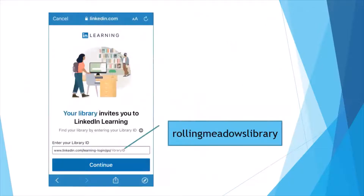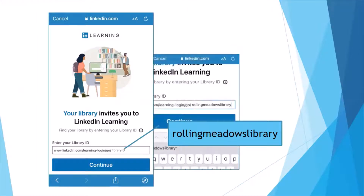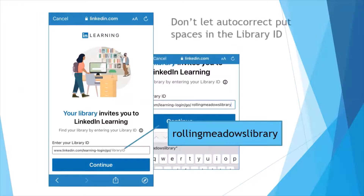The library ID for Rolling Meadows Library is "RollingMeadowsLibrary", typed as all one word at the end of the URL that shows in the box. Sometimes the autocorrect on your device will want to add spaces, so be careful not to let it.